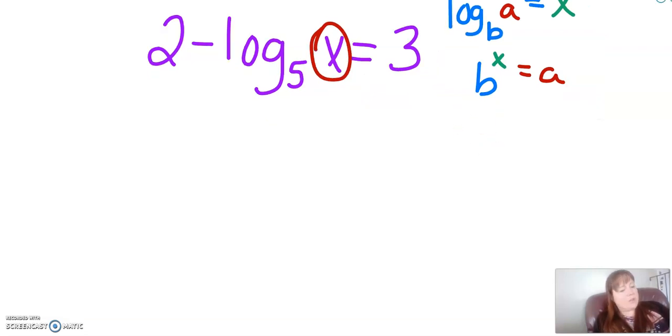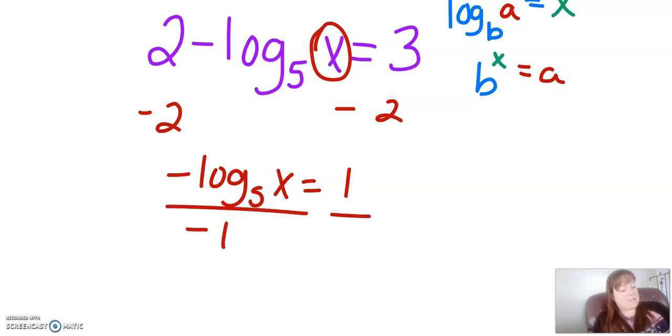Okay, so let's start by getting it into that form, and to do that, we've got to get rid of that 2 on both sides. We're going to subtract 2 from both sides, and we're going to get negative log 5 of x equals 1. Now we've got to get it still by itself, so we've got to divide both sides by negative 1, and we get log base 5 of x equals negative 1.